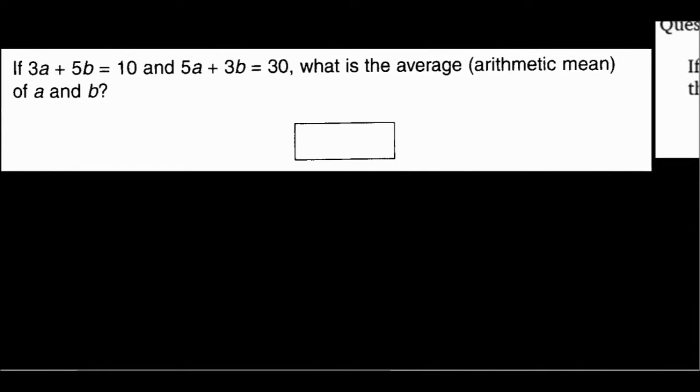So let's look at one scenario where GRE would test you on this concept. Here's the problem we have. If 3a plus 5b is 10 and 5a plus 3b is 30, what is the average of a and b? Average, we know average means I want to take the sum a plus b and I want to divide by the number of things I have, which is 2 in this case. So this is the value I am trying to look for.